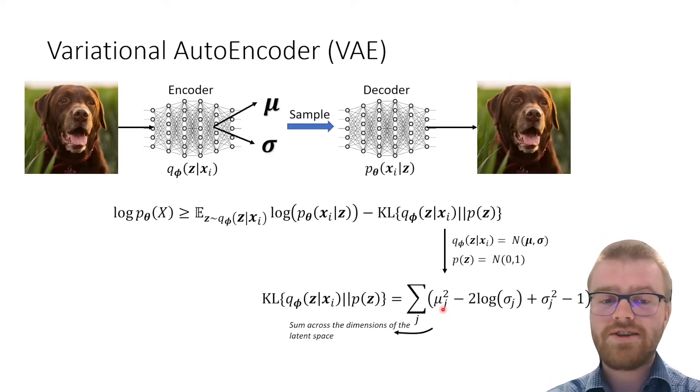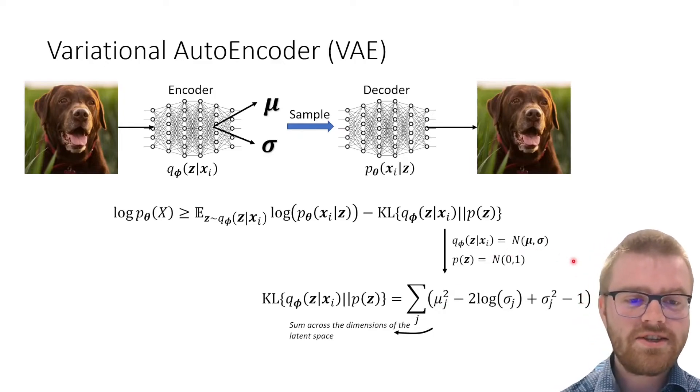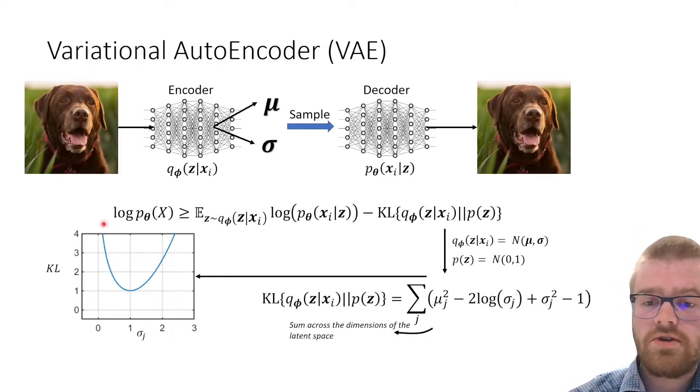We do a summation over j, which is the dimensionality of the bottleneck. We can immediately observe that this mean appears once—we've got the squared of the mean. So if we try to minimize this, we are going to push the mean towards zero.